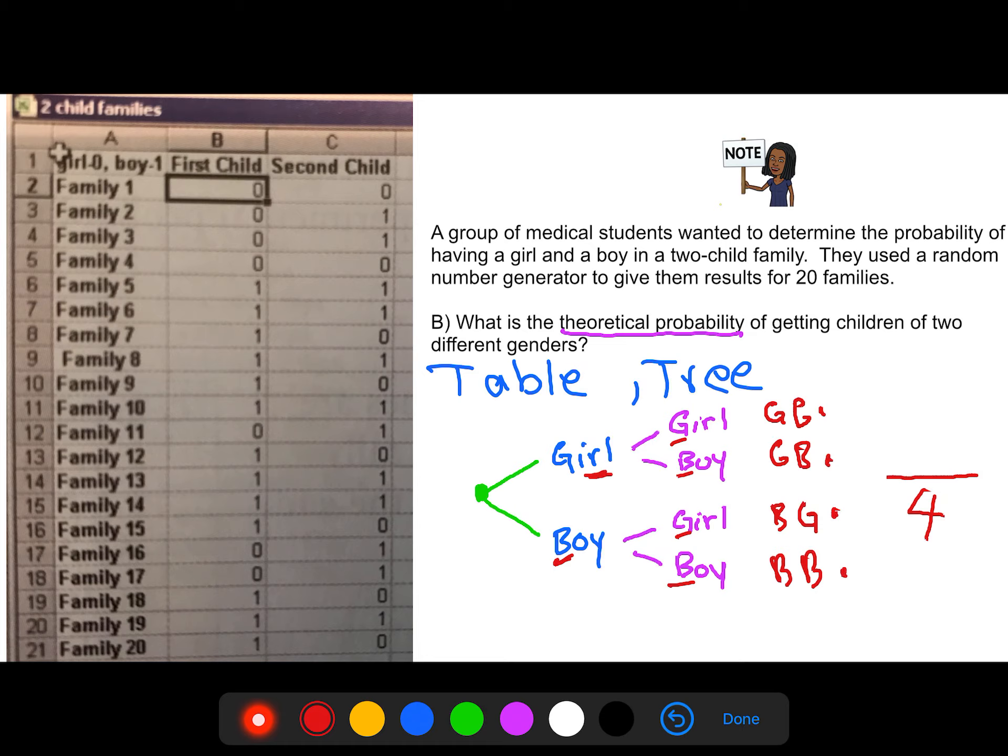Now, two different genders. Which ones are those? We have to be girl, boy. So here's our girl, boy. Boy, girl. Two over four. That's our result. That's theoretical. That's the one that you've been working on for the last little bit.